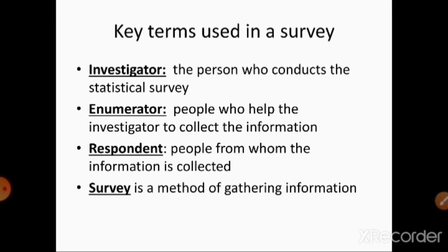What are the key terms used in a survey? The first one is investigator — the person who conducts the statistical survey. The second one is enumerator — the people who help the investigator to collect information. The third one is respondent — the people from whom the information is collected. The last one is survey — a method of gathering information where all information is collected together.